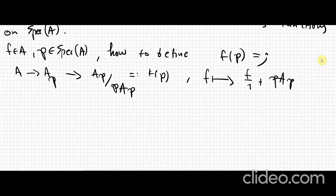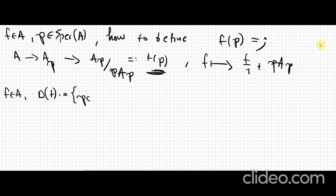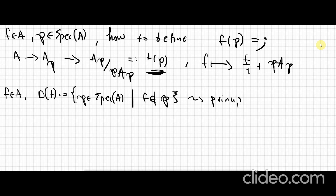So we don't really have a function — that's the first problem — because the image of p under f lives in k(p), which varies as p varies. But this is a good first step. For example, if f is an element in A, we have the so-called principal open subsets, which by definition are all the prime ideals in A that don't contain f. These are the so-called principal open subsets, and they form a basis for the Zariski topology.